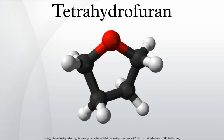About 200,000 tons of tetrahydrofuran are produced annually. The most widely used industrial process involves the acid-catalyzed dehydration of 1,4-butanediol. This method is similar to the production of diethyl ether from ethanol.